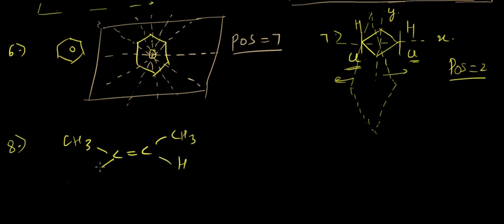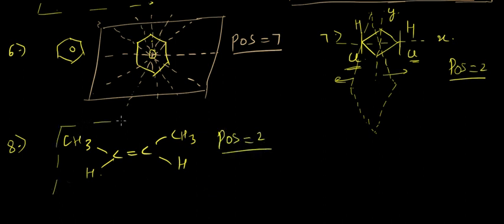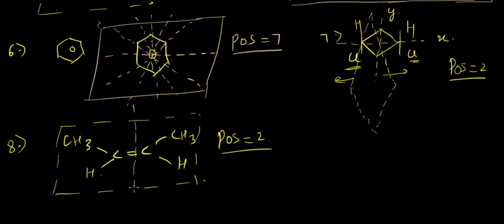In the eighth example, how many planes of symmetry does this compound have? Two — one horizontal plane due to sp3 hybridization of the carbon atoms, and one perpendicular plane.